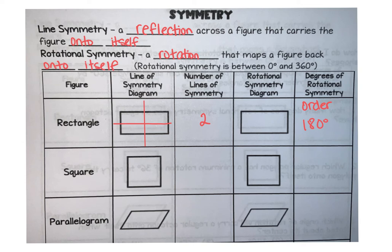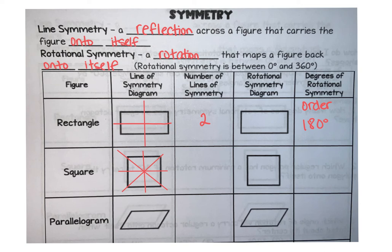A square has four lines of symmetry since it's a regular polygon with four vertices — each side and each corner gives a line of symmetry. It also has point symmetry. The rotational order is four, giving a magnitude of 90 degrees. For the parallelogram: there are no lines of symmetry, but it does have rotational symmetry with order two and a magnitude of 180 degrees.